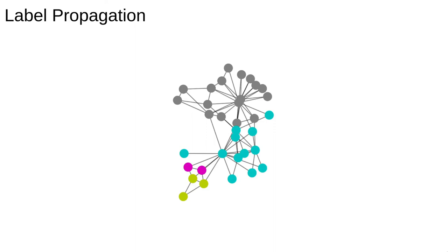Here we see two main communities, grey and blue, and two little offshoot communities in the bottom left.